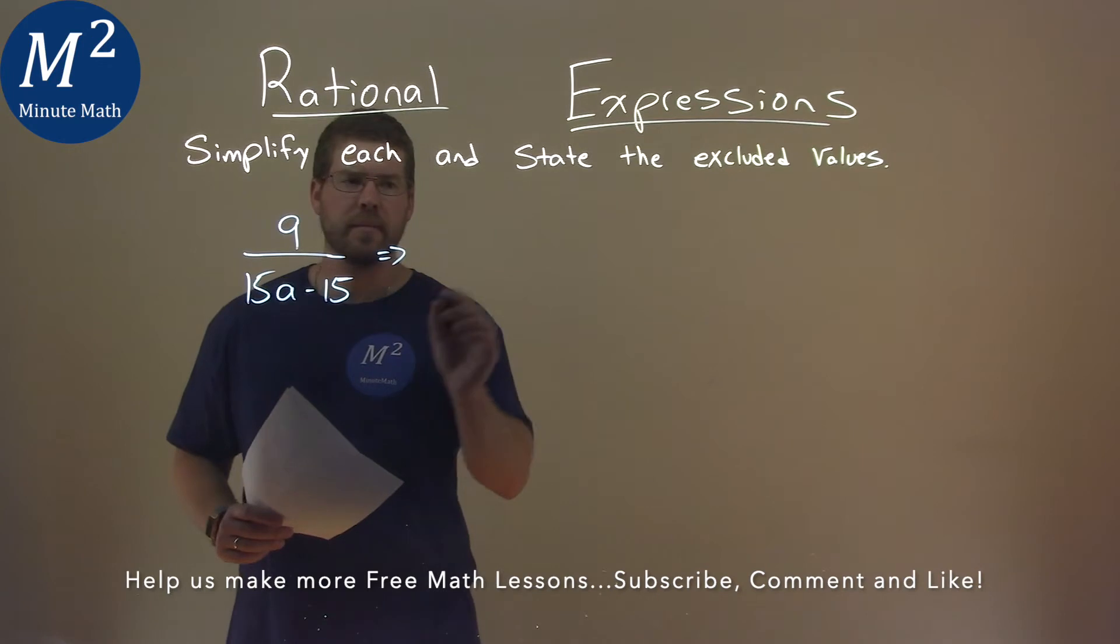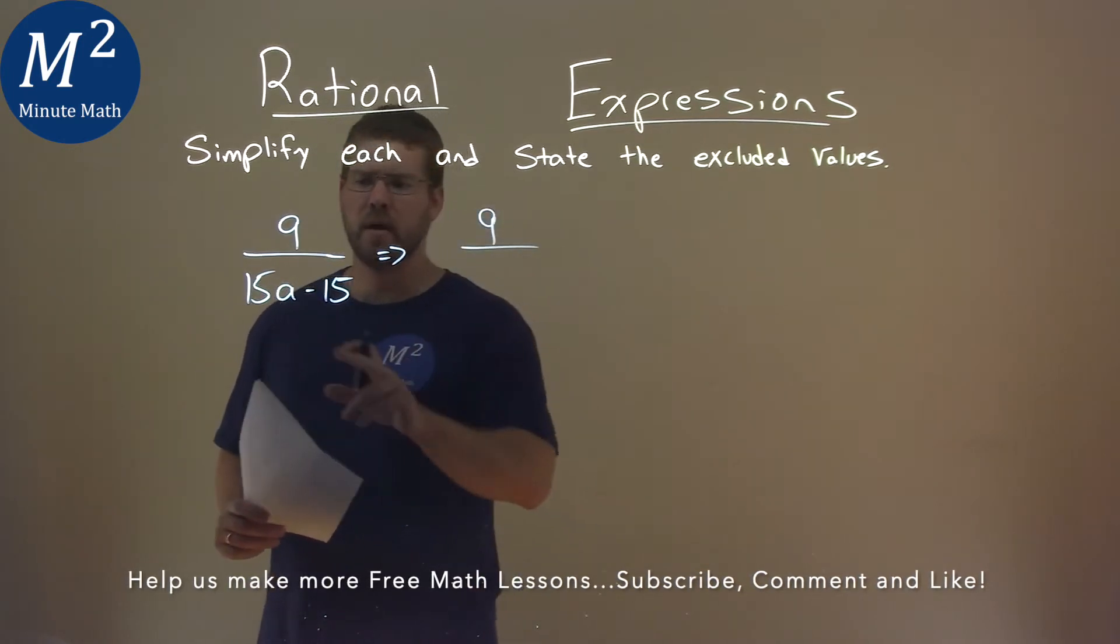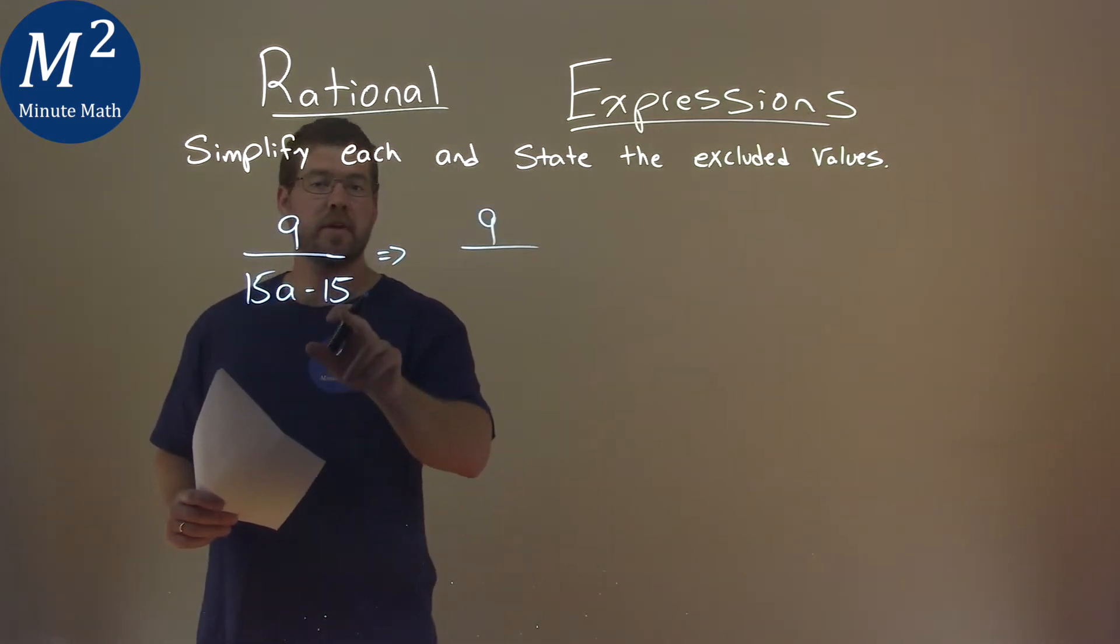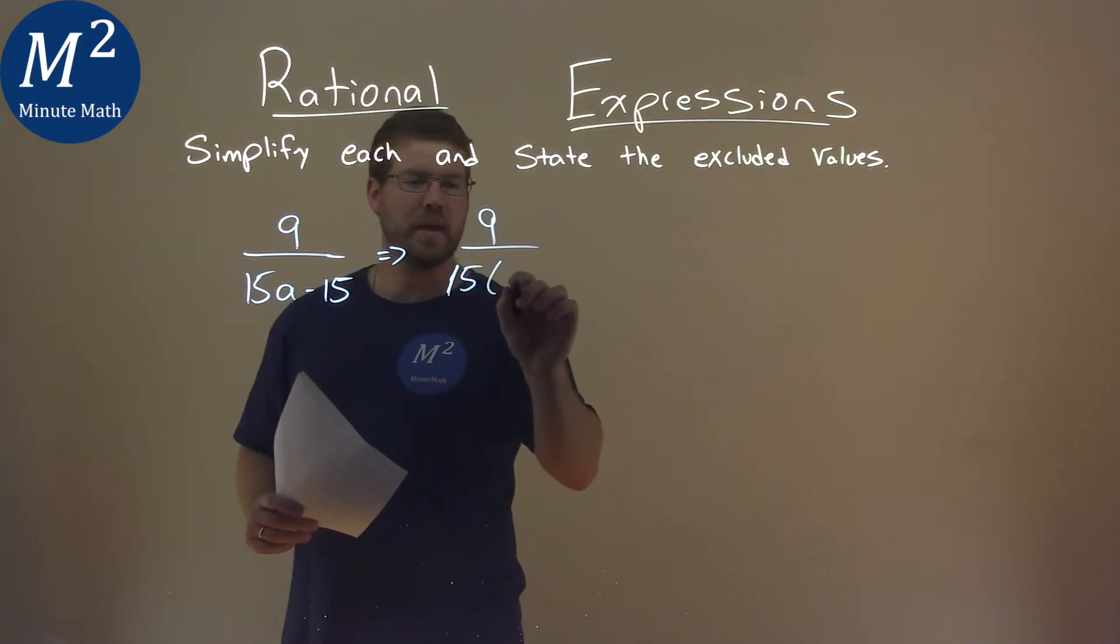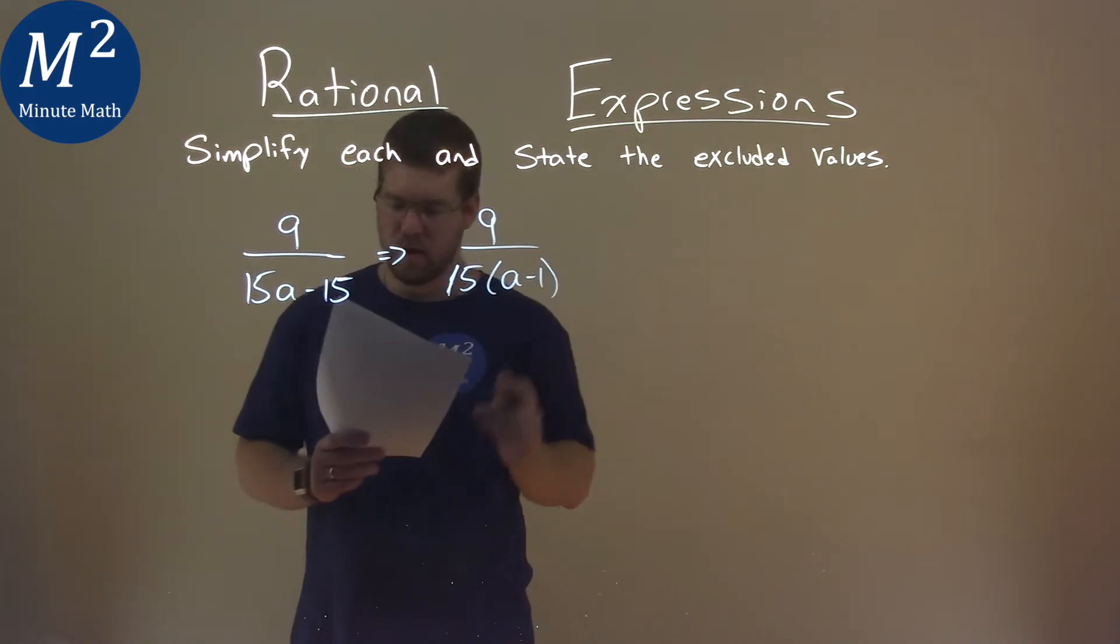Well, let's start simplifying. 9 stays in the numerator, but I see here I can pull out a 15 from both parts. So if I pull out a 15, I'm left with an a minus 1 right there.